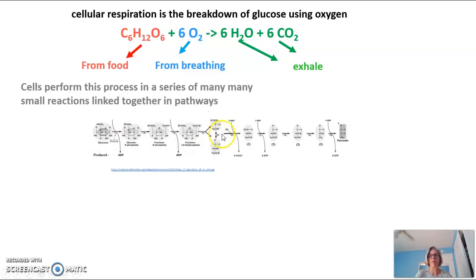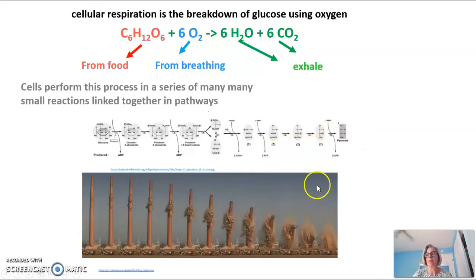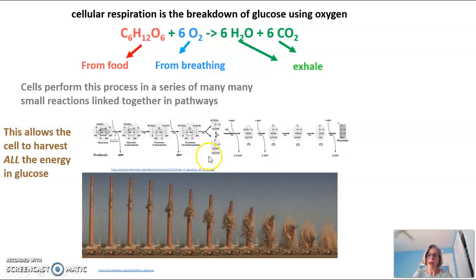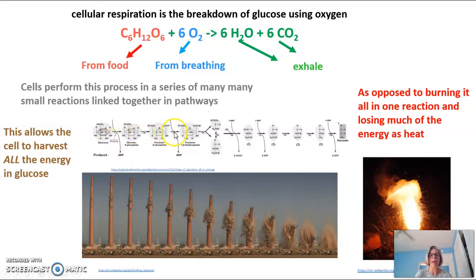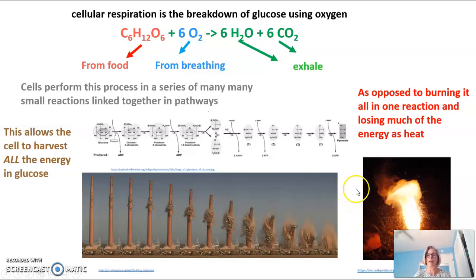This is the pathway for the breakdown of glucose — shown here is just the beginning part of the pathway. It doesn't break it all the way down into CO2 in one step; it involves many, many steps. Why does a cell do this in so many small steps? It's so that the cell can harvest all the energy in glucose. If the cell just burned it all up at once, like burning sugar, that would lose much of the energy as heat. The cell does this in very small controlled reactions to harvest all of the energy in glucose — much like the way a chimney tower is being broken down in a very controlled process, as opposed to just blowing it up.